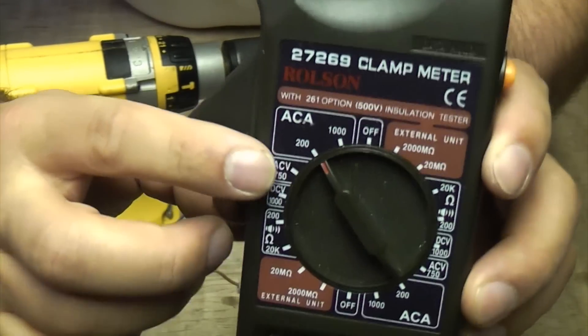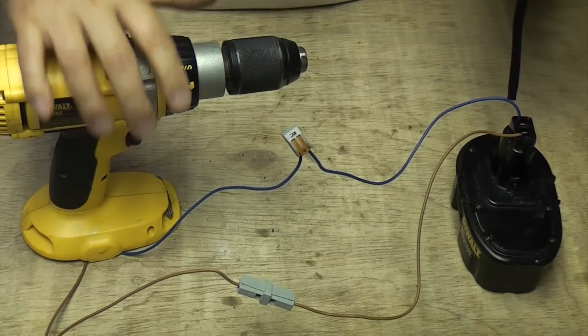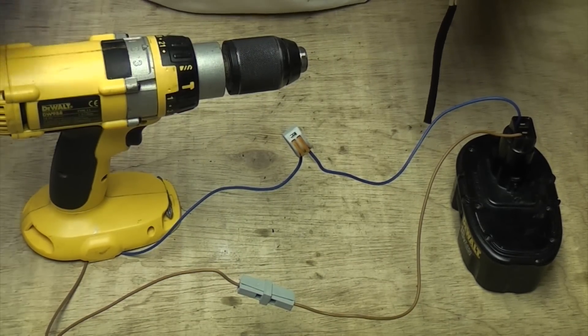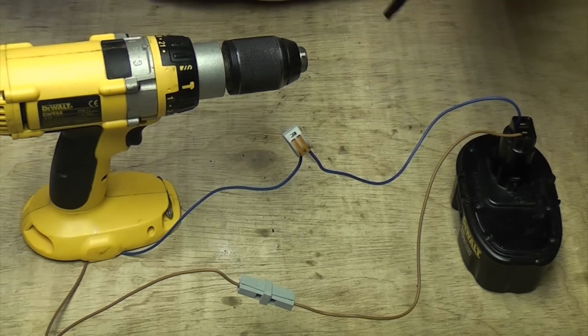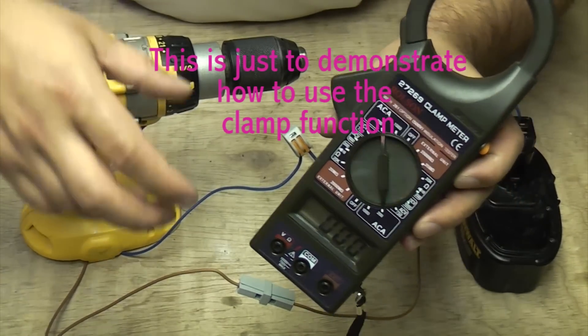So if you look there I've actually selected AC amps. Now this is a DC amperage setup but it will still work, but you'll get an incorrect reading. But I'm just going to show you how to measure the actual amps going through.